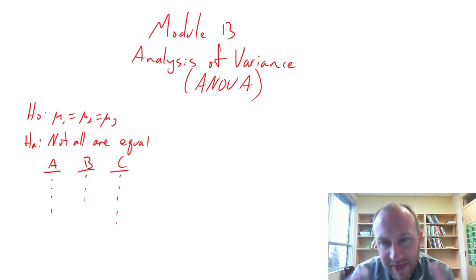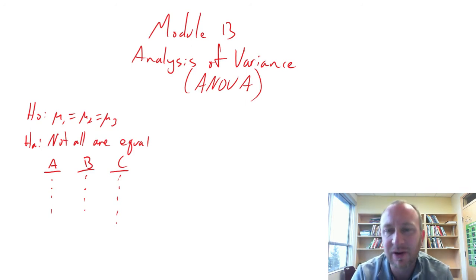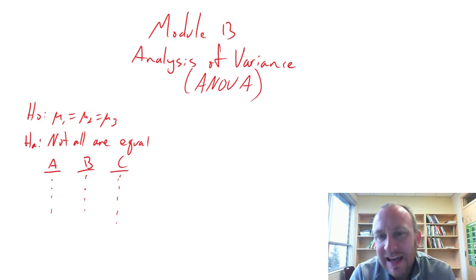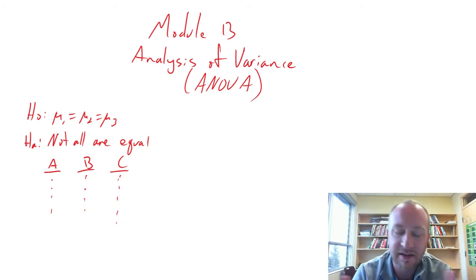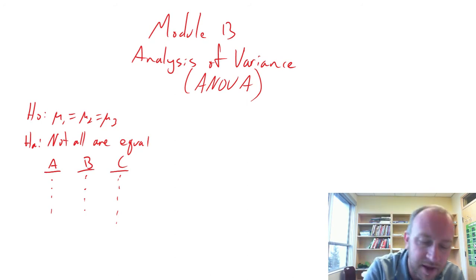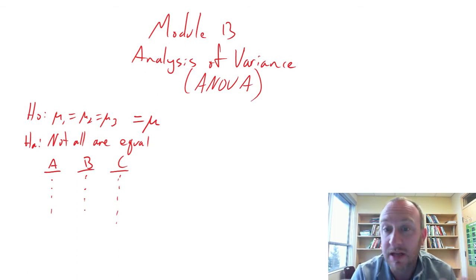For now we'll keep it simple with just three samples, which can have any number of observations — they don't have to be equal. Like any other test, we always enter the analysis with the assumption that the null hypothesis is true. If the null is true and mu1 equals mu2 equals mu3, then they must all equal some common population mean mu, meaning all three samples are coming from the same population.